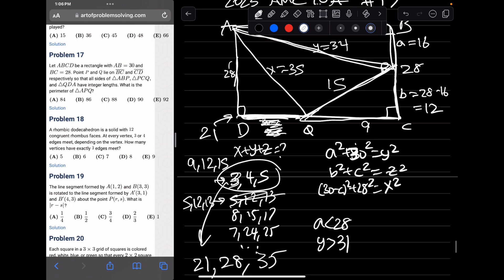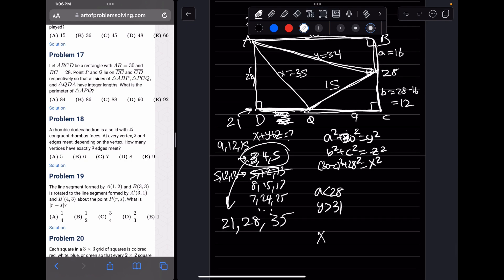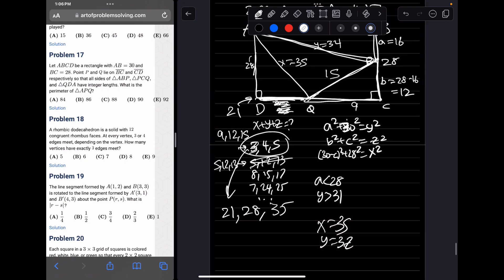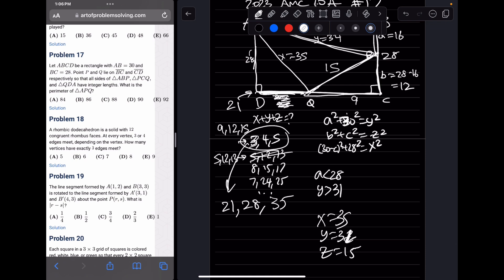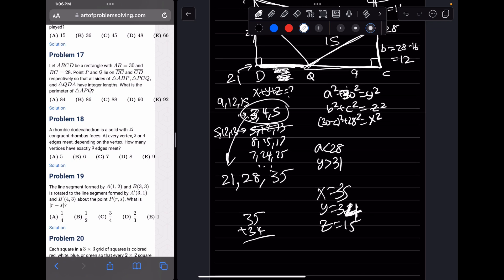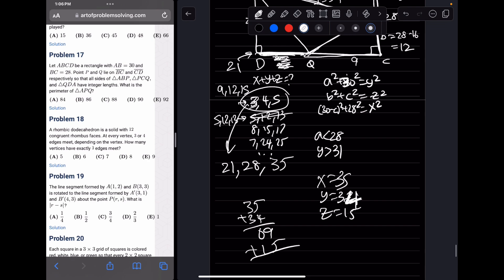So we can see that this question is just playing around with Pythagorean triples. So we have our answer X equals 35, Y equals 34, and Z equals 15. So we just add up all of these numbers, and we will get our answer. So 35 plus 34 is 69, plus 15, which will be 84, or answer choice A.